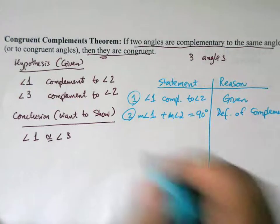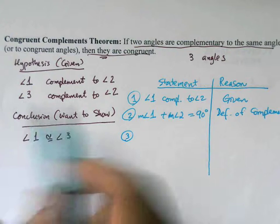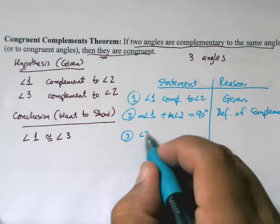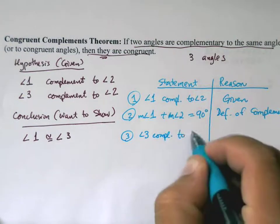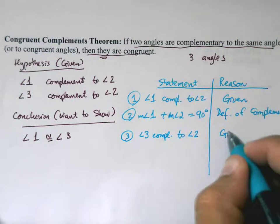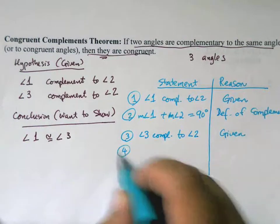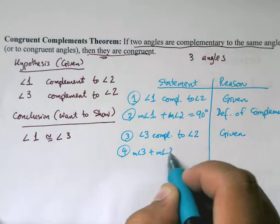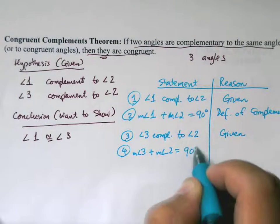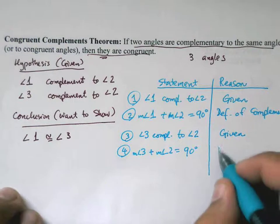The second given is that angle three is complementary to angle two. By the definition of complementary angles, the measure of angle three plus the measure of angle two equals 90 degrees.